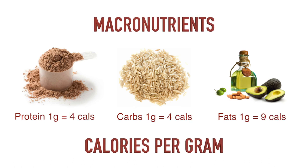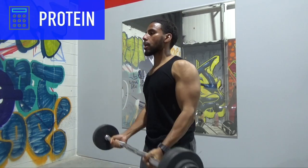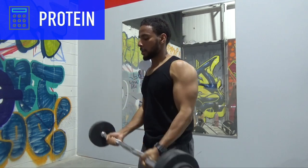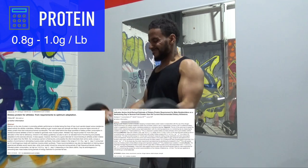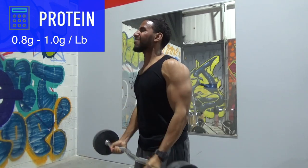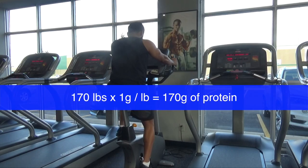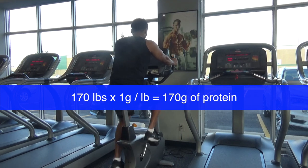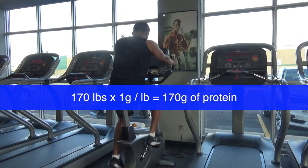Once we have our dieting calories established, we need to distribute them into protein, carbohydrates, and fats. The first macronutrient to establish is protein. While the general recommended intake is around 0.8 grams per pound of body weight, relatively lean individuals should consume around 1 gram of protein per pound of body weight while dieting. So if the dieter was 170 pounds, they would simply consume 170 grams of protein.